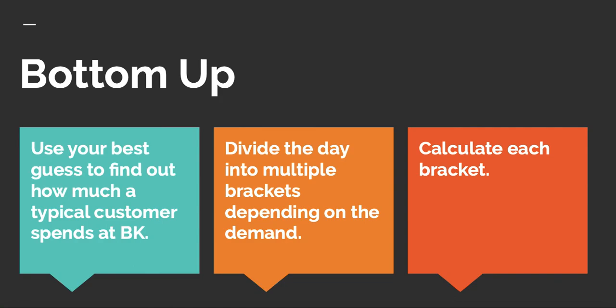To summarize the method: I used best-case assumptions to find how much a typical customer spends at Burger King, divided the day into multiple demand brackets, calculated revenue for each bracket, and then consolidated them. That's the bottom-up method I used. If you have a different solution, please mention it in the comments — I'd love to read it. I'll come up with more guesstimate examples and upload those videos soon. I hope this gave you some idea on how to approach guesstimate questions. Thank you, see you again.